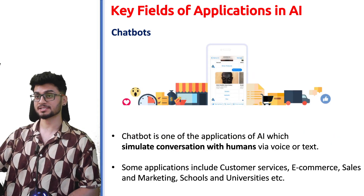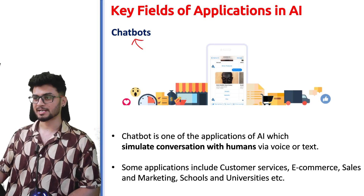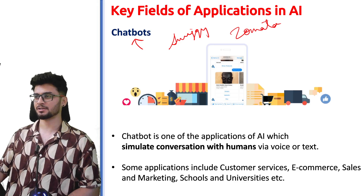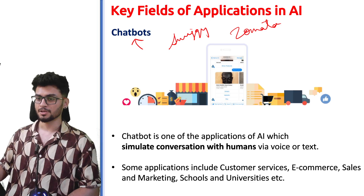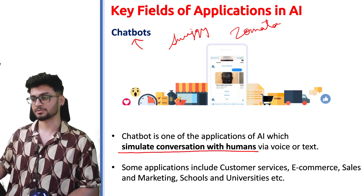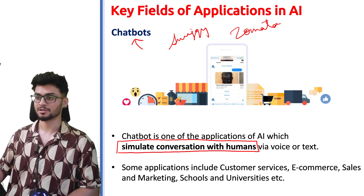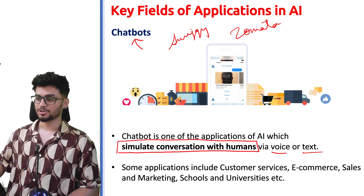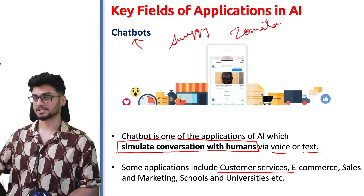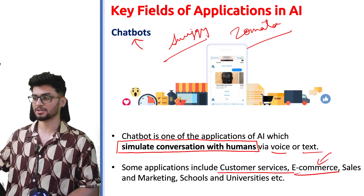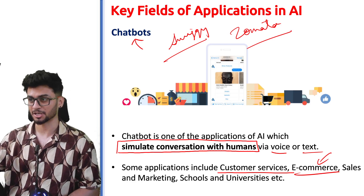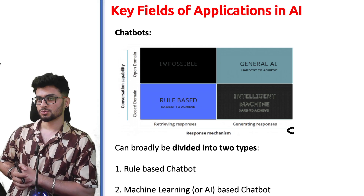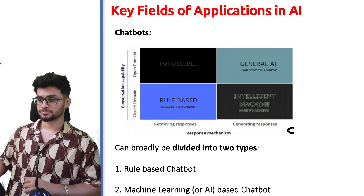Since we're talking about speech processing, there is something known as chatbots. You've probably used chatbots on Swiggy or Zomato — if there's a problem with your order, you go to the chatbot, it asks for your order number, and processes it automatically. Chatbots are able to simulate a conversation — you're not talking to a real human but to an AI system. This can happen by voice or text, and applications include customer service on Swiggy, Zomato, Amazon e-commerce, and many other similar applications.